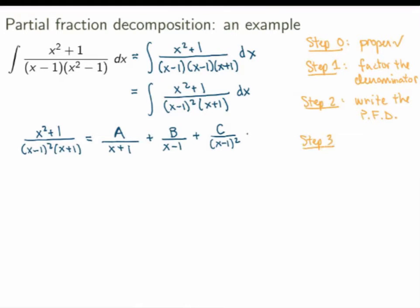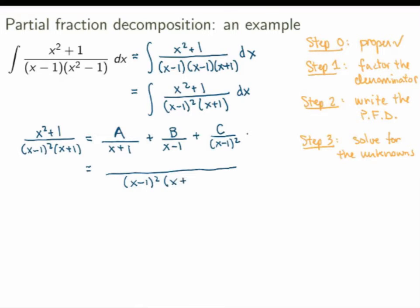Step 3 is to solve for the unknowns. I have three unknowns, so I want to solve for them. The trick is to put everything on a common denominator on the right-hand side and then equate the numerators. You have to be careful: don't just multiply the denominators — you want the common denominator to be exactly the same as the one on the left-hand side. So with repeated factors, use the same denominator as the left-hand side: x minus 1 squared times x plus 1. This gives A times x minus 1 squared plus B times x minus 1 times x plus 1 plus C times x plus 1, and this must equal the left-hand side for all x.